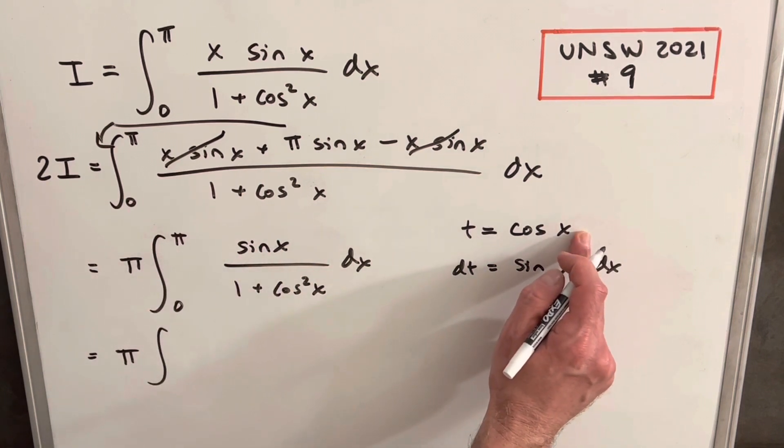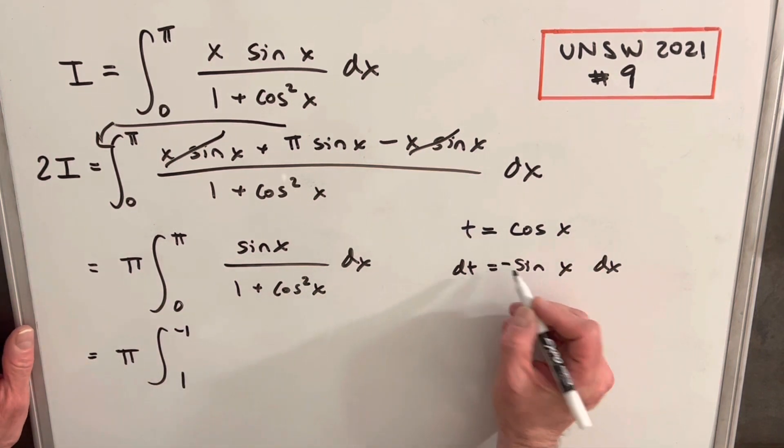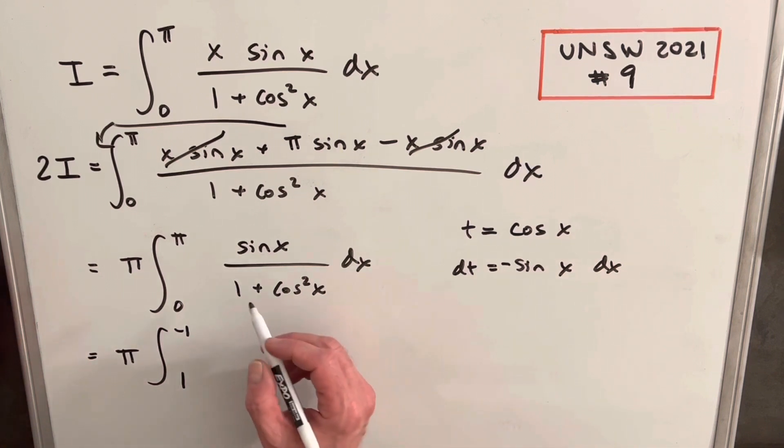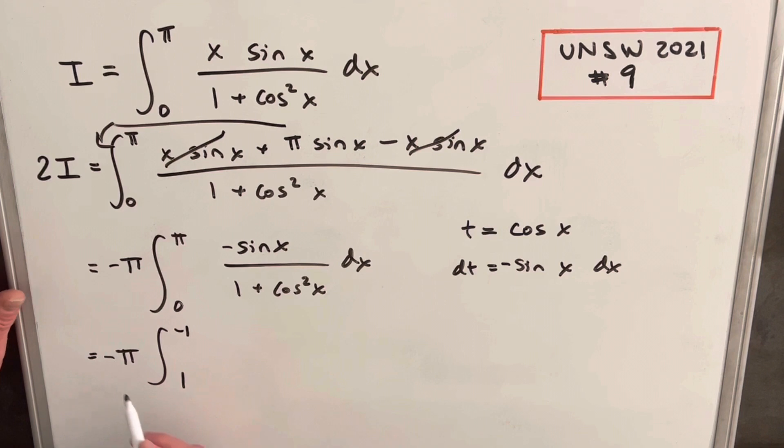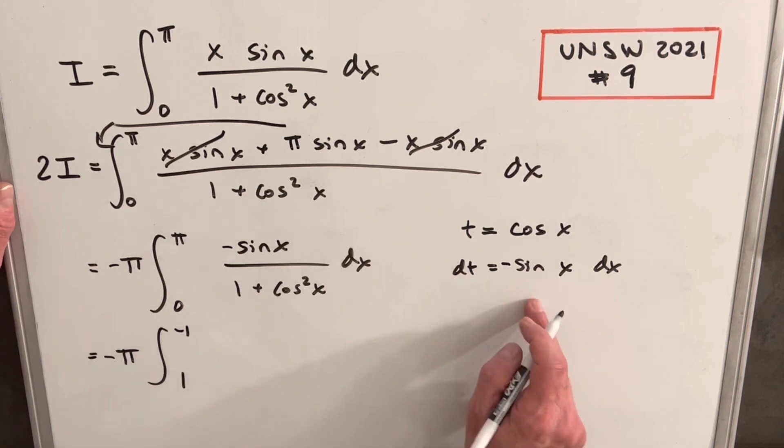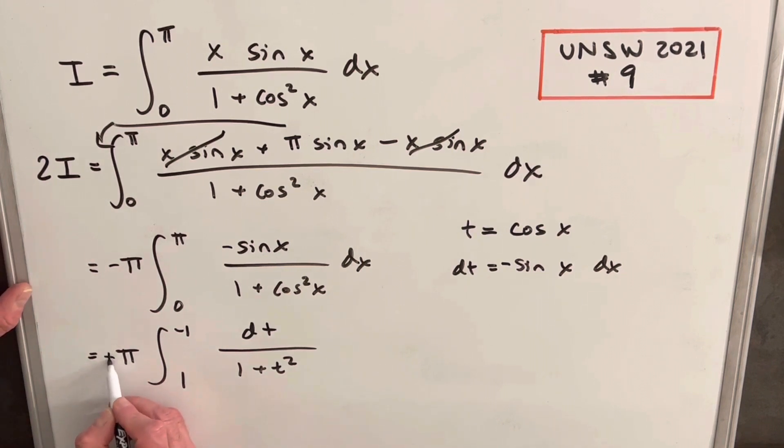So cosine of π is going to be minus 1. Cosine of 0 is going to be 1. Oh sorry, I forgot a minus sign here. Derivative of cosine is minus sine. And then what I'm going to do is I'm just going to create that minus here. And we'll put a minus out front so that we're not changing this. So now that we have that, we still have our dt in the numerator, so we're going to have dt over 1 plus t squared. And then I'm going to use this minus sign to flip the bounds. So we'll just change the sign there like that. So we're going from minus 1 to 1.